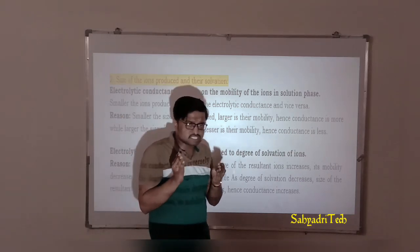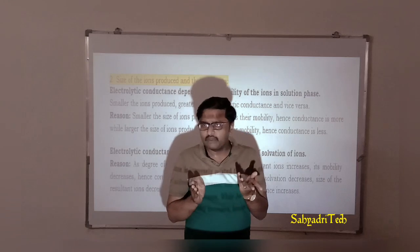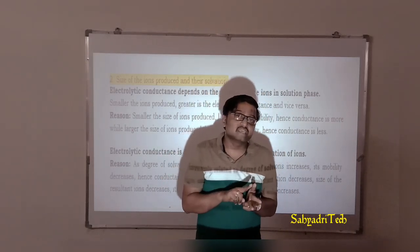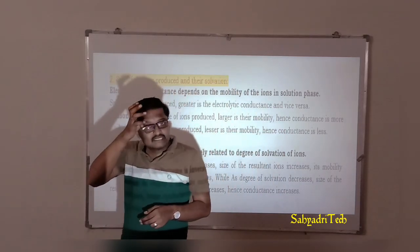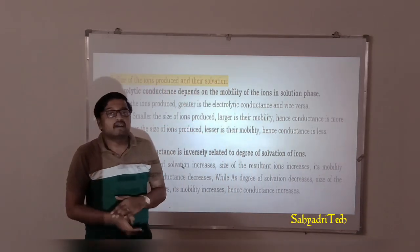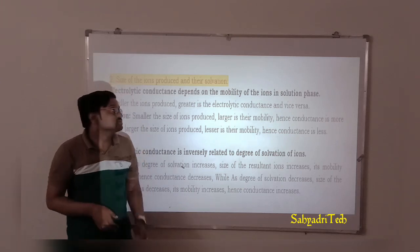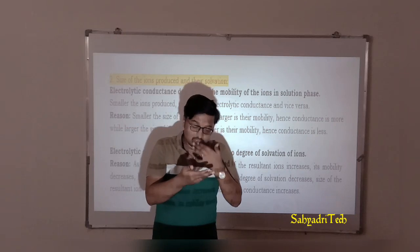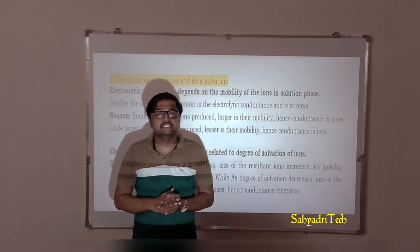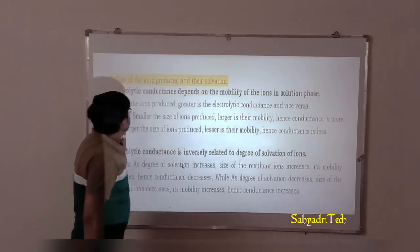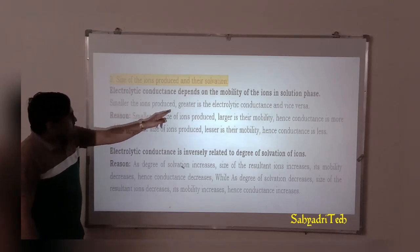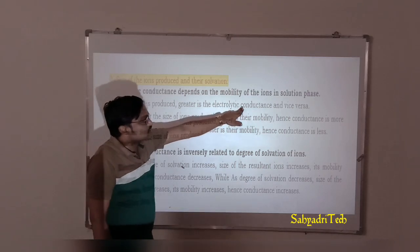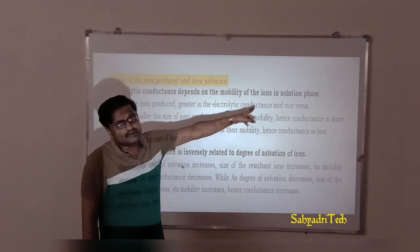So size and mobility are inversely related. Larger the size, lesser is the mobility, and vice versa. If mobility is more, conduction is more; if mobility is less, conduction is less. Therefore, smaller the ions produced, greater is the electrolytic conductance, and vice versa. Larger the ions produced, lesser is the electrolytic conductance.